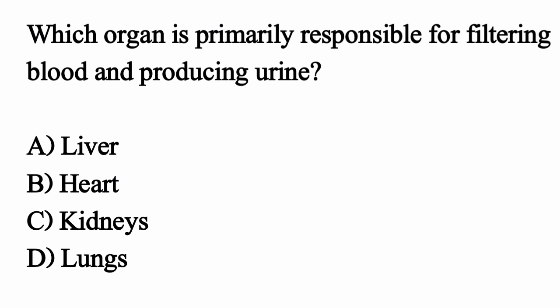Which organ is primarily responsible for filtering blood and producing urine? The correct option is option C: kidneys.